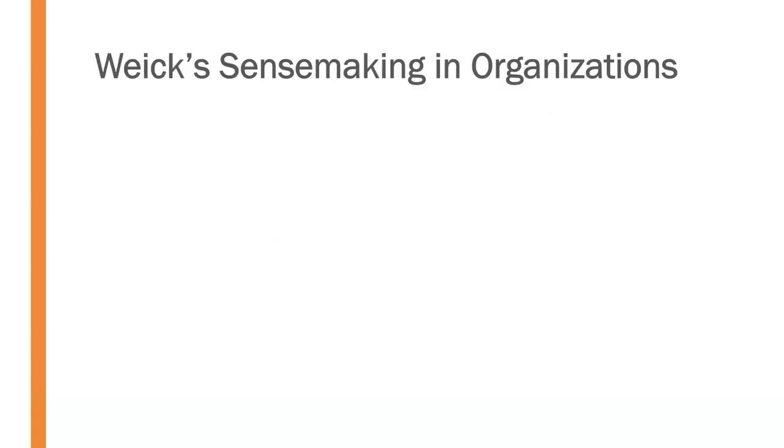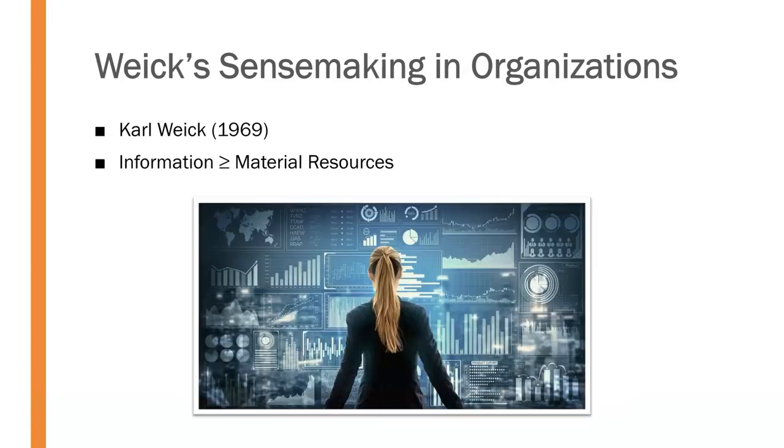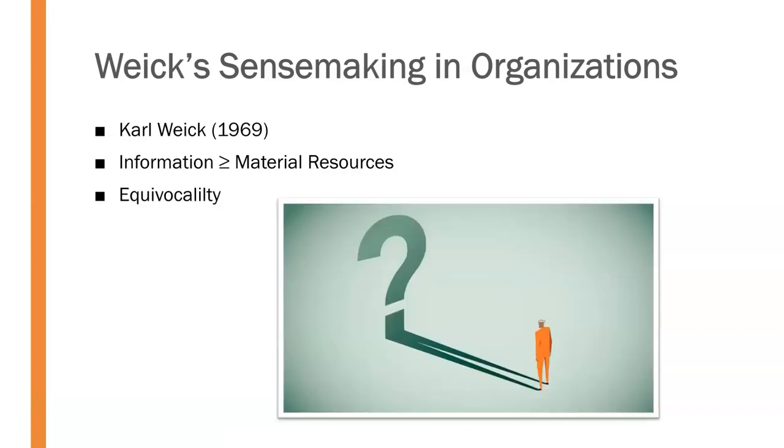One of the most significant branches of theory to extend from systems theory was Weick's sense-making in organizations. Proposed by Carl Weick in 1969, sense-making in organizations observes that information is as or perhaps even more valuable than material resources in many organizations. According to Weick, organizations, and more specifically the people within those organizations, struggle to reduce what he called equivocality, which essentially boils down to uncertainty.